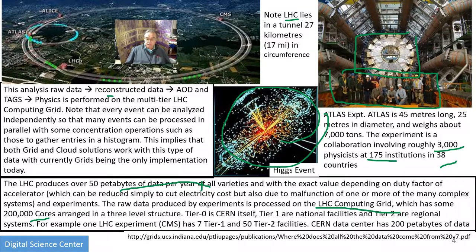They have tiers ranked by location. Tier 0 is CERN itself, where the data is taken. Tier 1 are facilities in Europe, England, or the US. Tier 2 are regional facilities — you can have any number of those. For CMS, there are 7 Tier 1 and 50 Tier 2 sites, and it succeeds in getting all those people to work together.